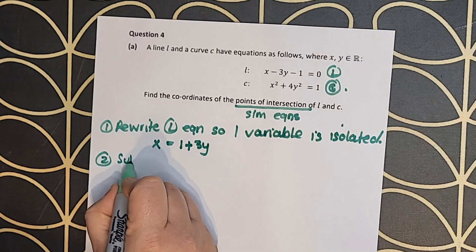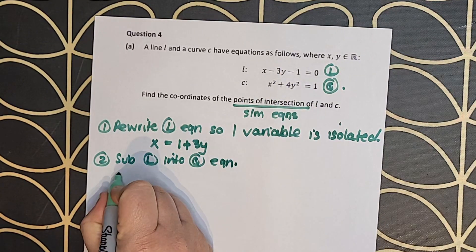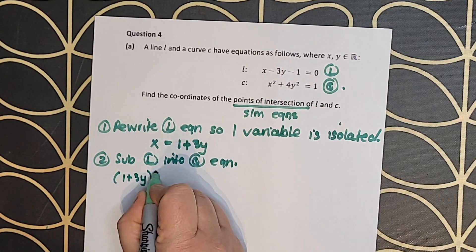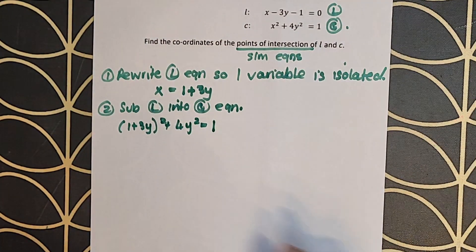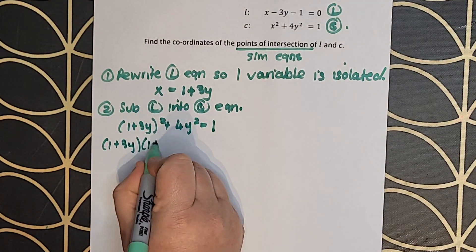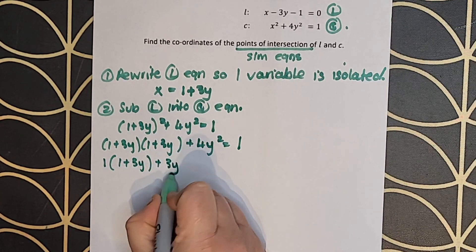The first step is to rewrite the linear equation so that one variable is isolated, so I'm rewriting that as x equals 1 plus 3y. Then I'm going to take that 1 plus 3y and every time I see x in the quadratic, I'm going to change it to that, so I'm substituting that in.